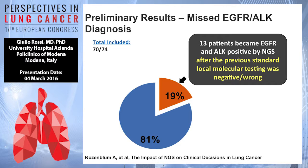As presented last year in Denver, if you use NGS to determine EGFR mutations or ALK rearrangements, you can lose some cases if you don't use the right tissue with the right methods in your lab. It's very important to clearly fix the tumor tissue and the methods available.